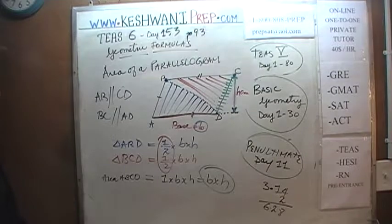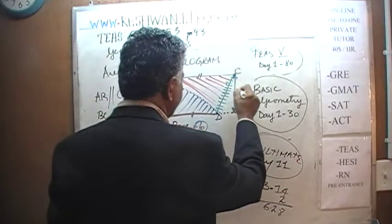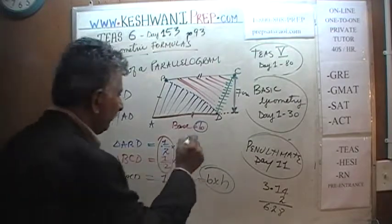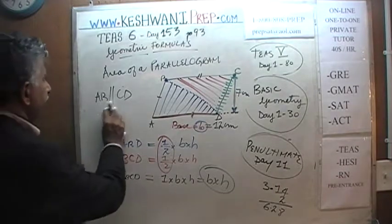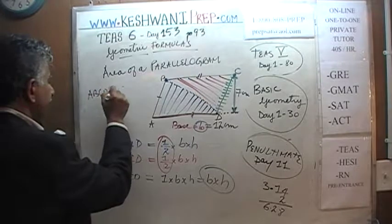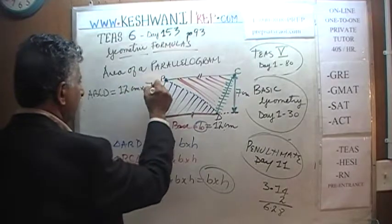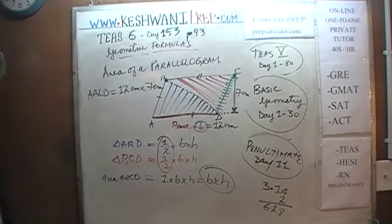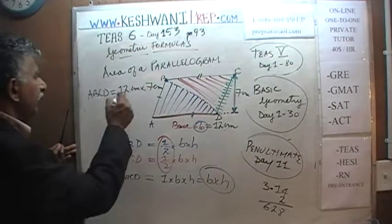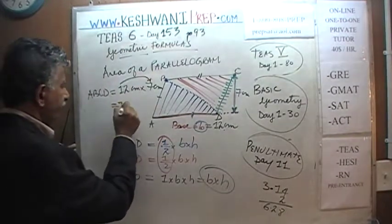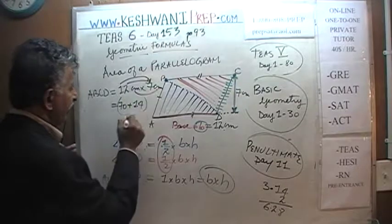They have to give you the figures. For example, if they tell us that the height is 7 centimeters and the base is 12 centimeters, now we can figure out the area. The area of parallelogram ABCD is base times height: 12 centimeters times 7 centimeters. Centimeters times centimeters is centimeters squared.